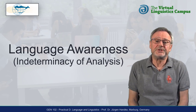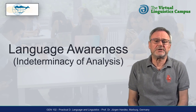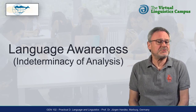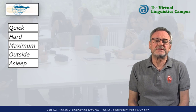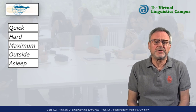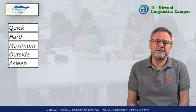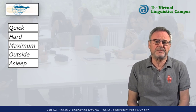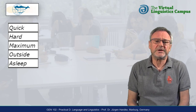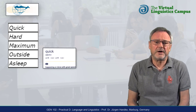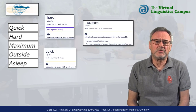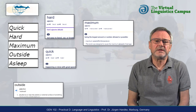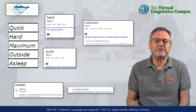Let's look at the homogeneity of word classes in this practical. Here is a set of words that in standard dictionaries are all classified as adjectives: Quick, Hard, Maximum, Outside, and Asleep.